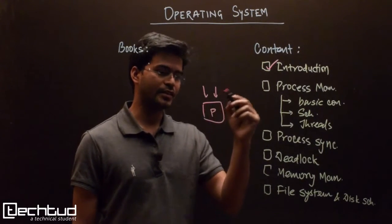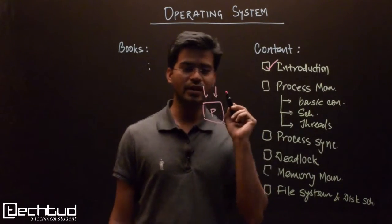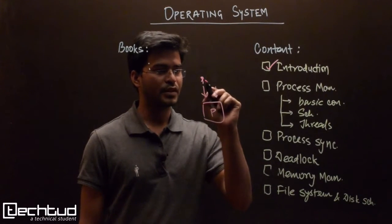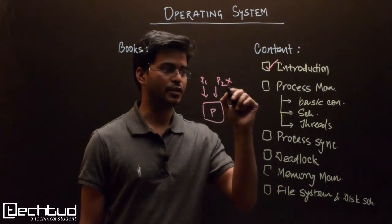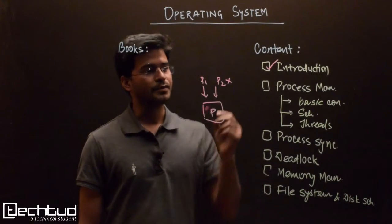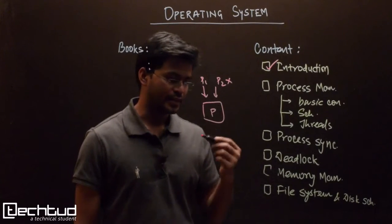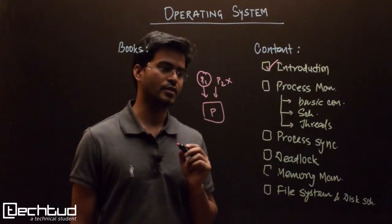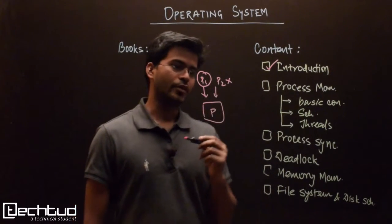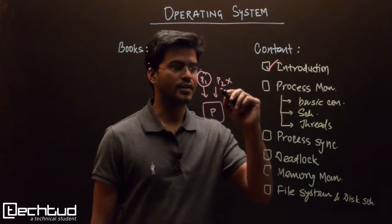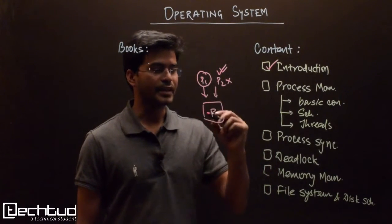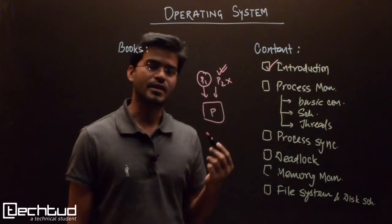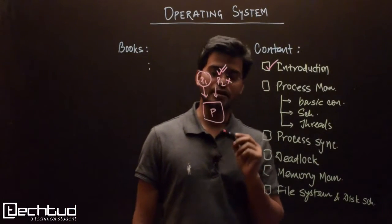The reason I say 'illusion' is that you have only one processor on which all the processes are executing. You feel like they are executing in parallel, but they are not. What happens is that when process P1 is executing, P2 will not be executing at that time. At a certain event, P1 holds its execution, saves its record, and then P2 starts executing. This switching is so fast that you feel multiple processes are executing together.